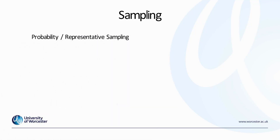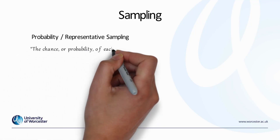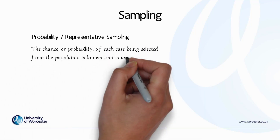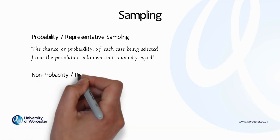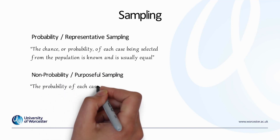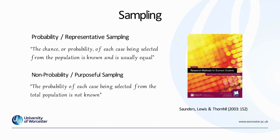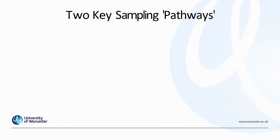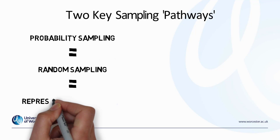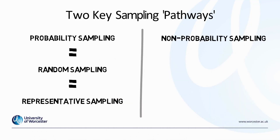When it comes to sampling, we have two main types. The first is probability or representative sampling, where the chance or probability of each case being selected from the population is known and is usually equal. Or we have non-probability or purposeful sampling, where the probability of each case being selected from the total population is not known. There are often different words used in the literature: probability sampling can also be referred to as random sampling or representative sampling, whereas non-probability sampling can also be referred to as non-random sampling or purposeful sampling.